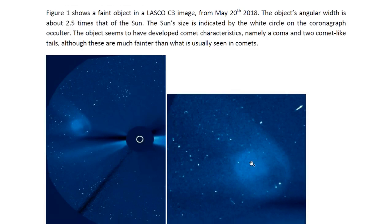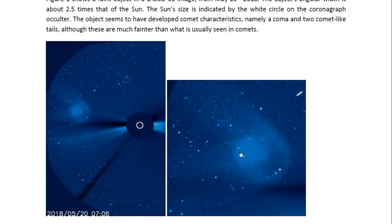The object seems to have developed comet characteristics, namely a coma. This gaseous part looks diffuse. It's obviously emitting light, that's why it looks white, and two comet-like tails. Although these seem to be much fainter than what is usually seen in comets.